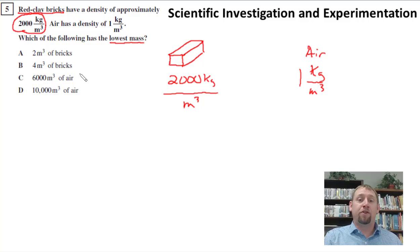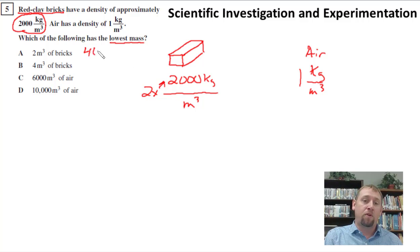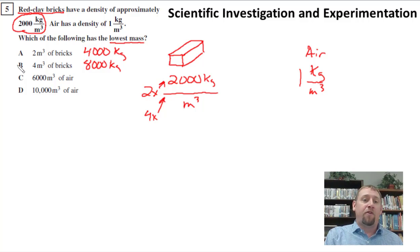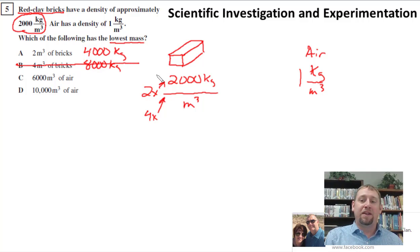Option A: two meters cubed of bricks. In your head you've got to think — two times whatever this is — so two times 2,000 gives 4,000 kilograms of bricks. Option B: four meters cubed of bricks would be four times 2,000, or 8,000 kilograms of bricks. So for lowest mass so far, A could be a choice, but B definitely isn't.